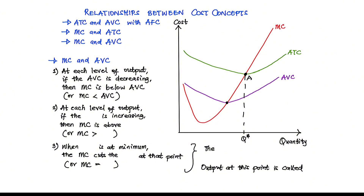Next, at each level of output, if the average variable cost is increasing, then the marginal cost is above the average variable cost, or MC is greater than AVC. So when AVC is increasing, the marginal cost is above the average variable cost — which is the opposite of the first relationship.